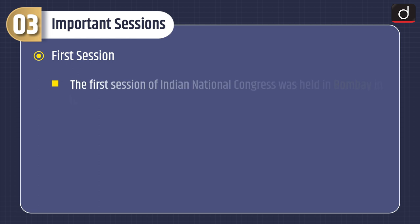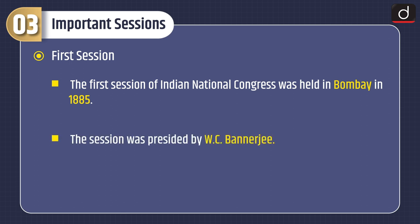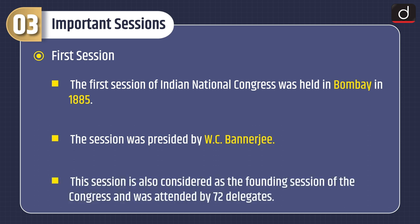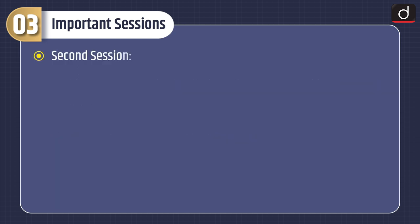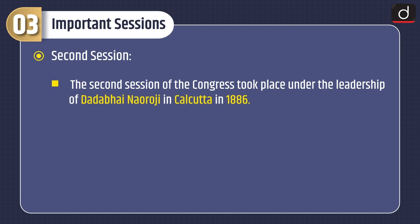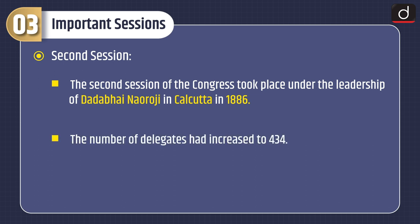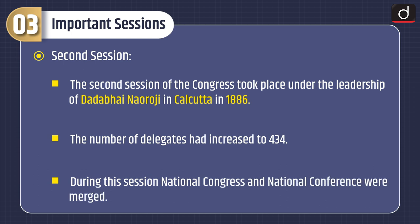Now let's have a look at Important Sessions of INC. First Session: The first session of INC was held in Bombay in 1885. The session was presided by W.C. Banerji. This session is also considered as the founding session of the Congress and was attended by 72 delegates. Second Session: The second session of the Congress took place under the leadership of Dada Bhai Naoroji in Calcutta in 1886. The number of delegates had increased to 434. During this session, National Congress and National Conference were merged.